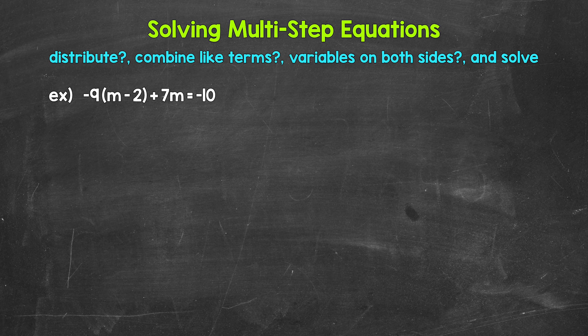Let's jump into our example where we have negative nine, then in parentheses m minus two, and parentheses plus seven m equals negative 10. Let's work through this step-by-step.